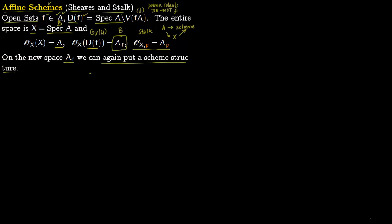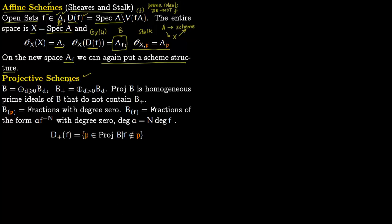Now let us talk about projective schemes. For projective schemes we use graded rings. Anytime you see a graded ring, think of it in terms of homogeneous polynomials — for example K[X₀, …, Xₙ] arranged by grading. For instance, X₀² + X₁ is not homogeneous because one term has degree 1 and the other degree 2. Something like X₀² + X₀X₁ is homogeneous of degree 2. You can grade polynomials by degree, and for projective schemes you start with such graded rings.